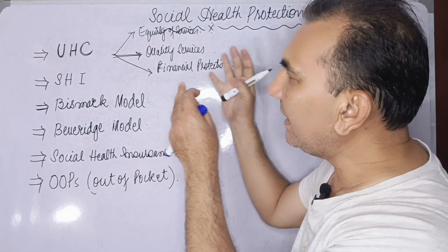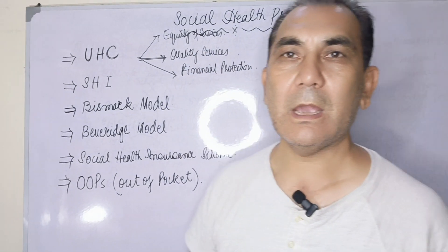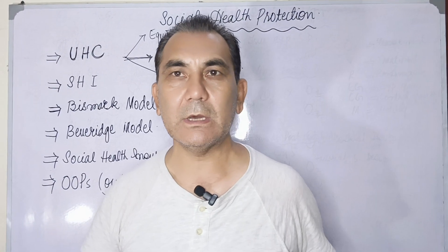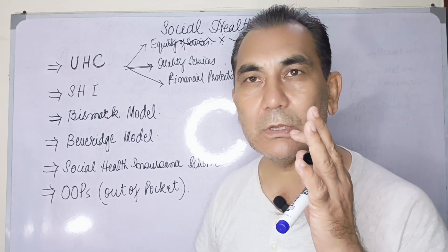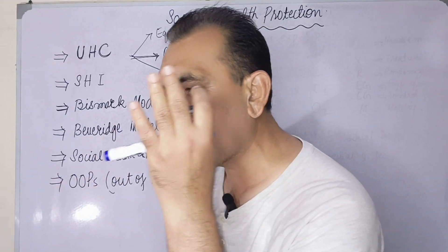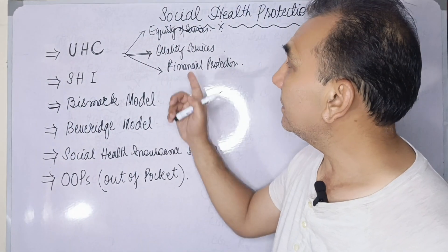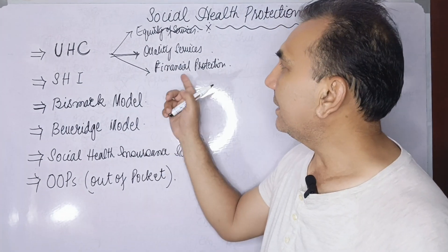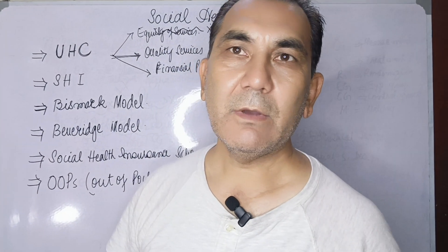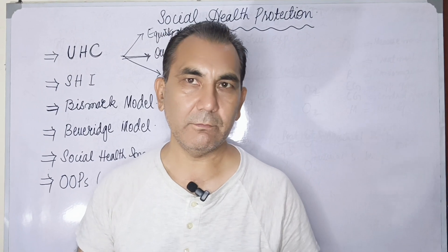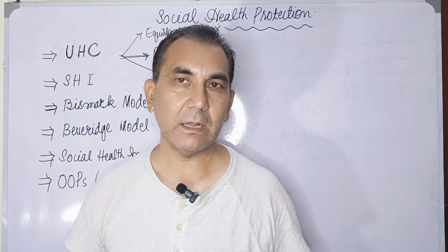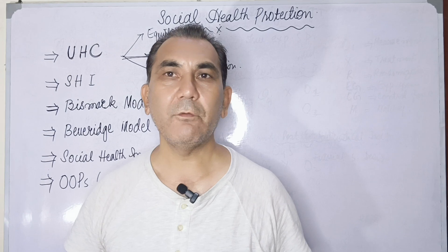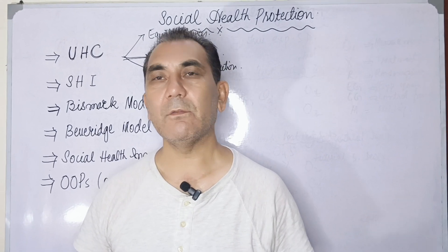These are the three main goals of Universal Health Coverage. The first is equity of services — providing need-based healthcare services to every individual or community at the time of healthcare access. The second is quality services — whenever healthcare services are provided to the community or individuals, they should be of quality. The third is financial protection — when anyone is accessing healthcare, they should not fall into financial hardship; services should be affordable.